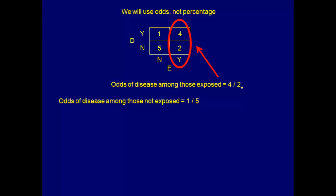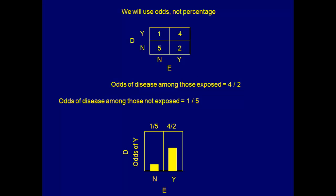To calculate the odds of disease among those who are exposed, we do the same: take the number with the disease — four — and divide by the number without the disease — two. So the odds of disease among the exposed is 4/2. To relate the odds to our causal hypotheses, we look at the odds of disease among those exposed and compare it to the odds among those not exposed. If they differ, either higher odds in the exposed or in the unexposed, we can hypothesize one of the causal relationships.